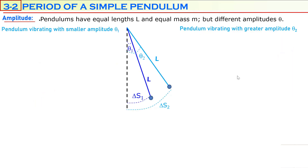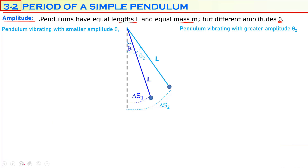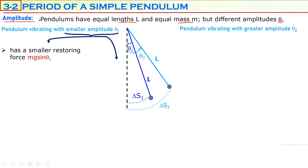The second quantity we study is amplitude. All other quantities — masses, lengths, and free-fall accelerations — are kept constant. Only the amplitudes are different: one pendulum has a shorter amplitude, the other has a longer amplitude. The pendulum vibrating with a smaller amplitude, theta-1, will have a smaller restoring force.